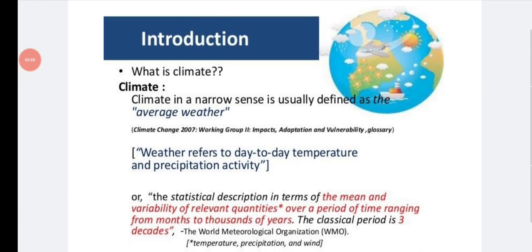So what is climate? Climate in a narrow sense is usually defined as the average weather. Whatever weather you are seeing in the surrounding environment that is called the climate. Weather refers to day-to-day temperature and precipitation activity.